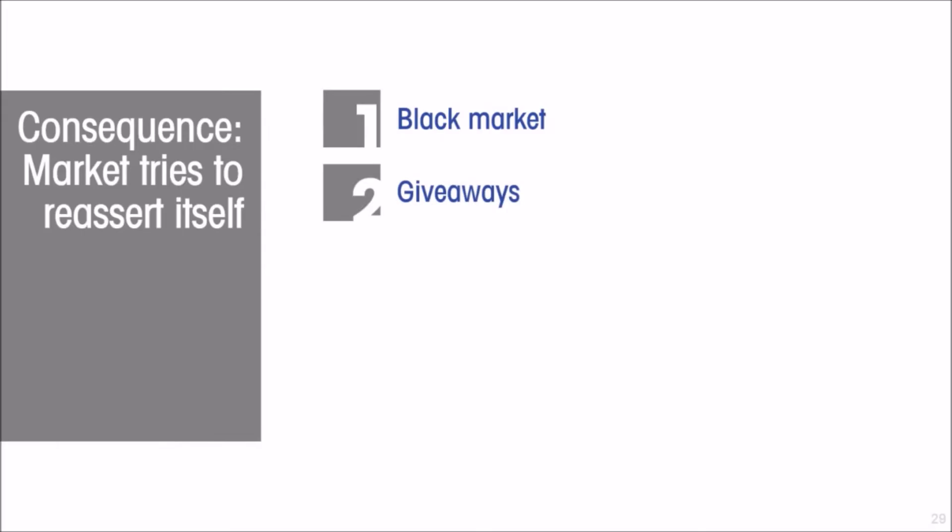In the presence of a price floor, another way the market tries to assert itself is with the opposite of bundling — giveaways. If you buy this product at the artificially high price that is the price floor, you get some additional giveaway for free, so that the combination ends up being close to what would have been the market price for the bundle. And instead of decreases in quality, we have increases in quality — suppliers compete on quality instead of on price.